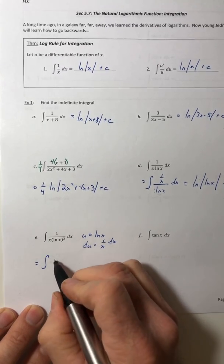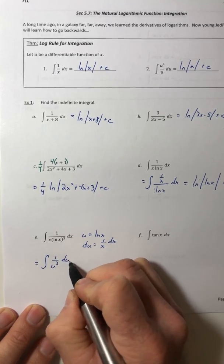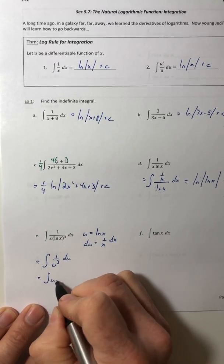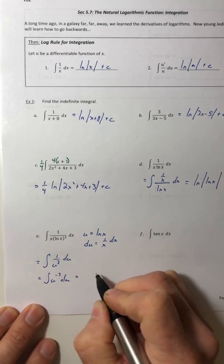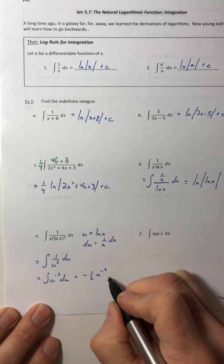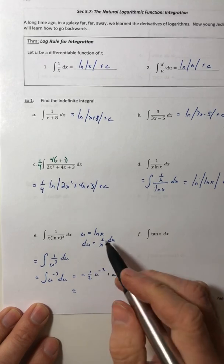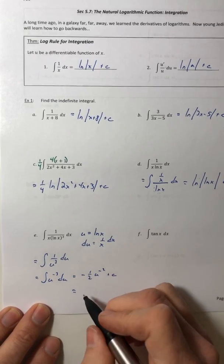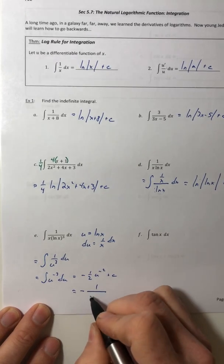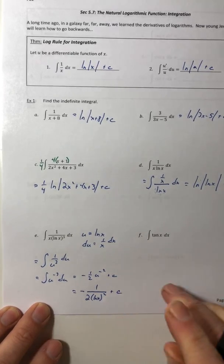So if I switch everything around, I end up with 1 over u to the third du. So I'm really integrating u to the negative third, which is negative 1 half u to the minus 2. And then I'm going to flip this down to the denominator, and then I'm also going to change it back in terms of x. So minus 1 over 2 ln of x squared plus c.